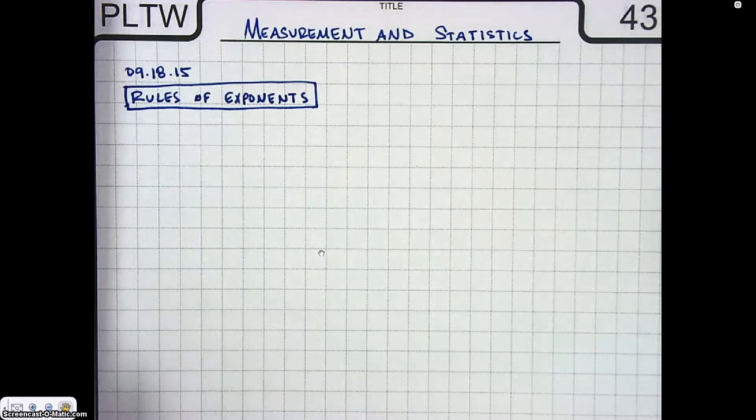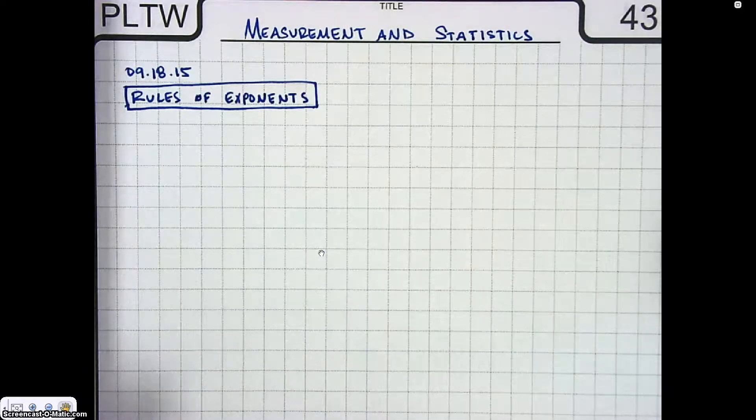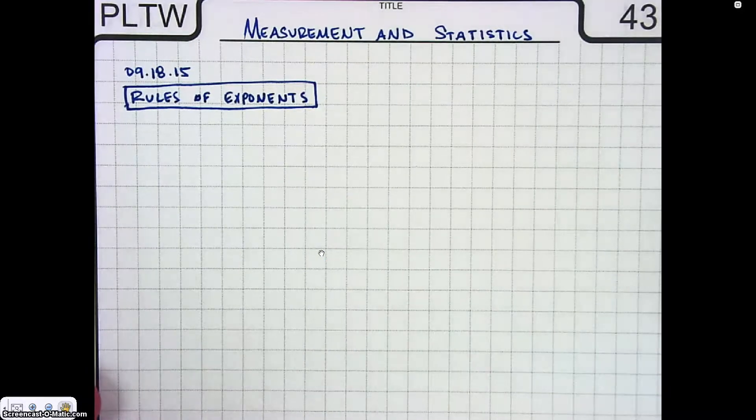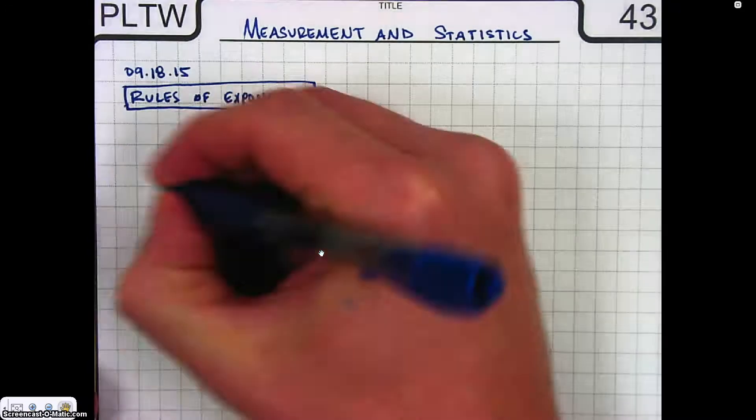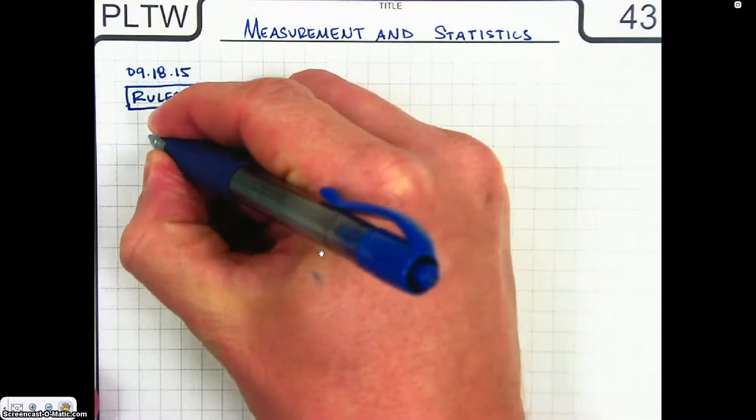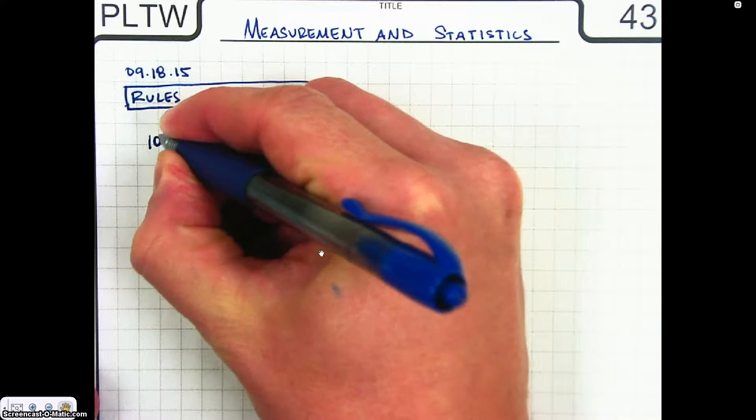I'm going to go over some of the rules with working with exponents. So the first example here, let's say we have 10 to the 0.